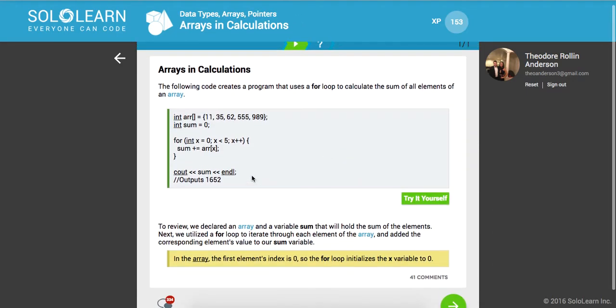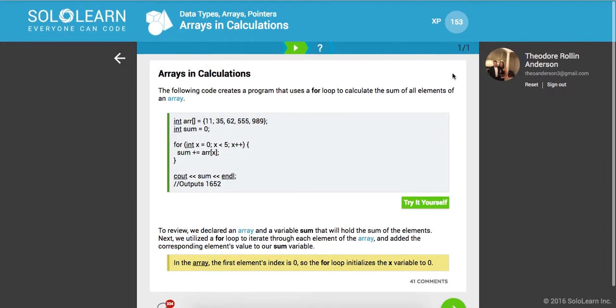This is going to be a really quick lesson, just one question, but we've got to go through it nevertheless. Arrays and Calculations. The following code creates a program that uses a for loop to calculate the sum of all elements. So here's a good use case of this data structure in an array.